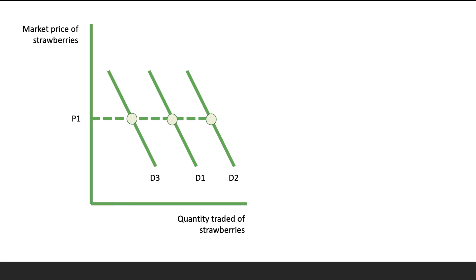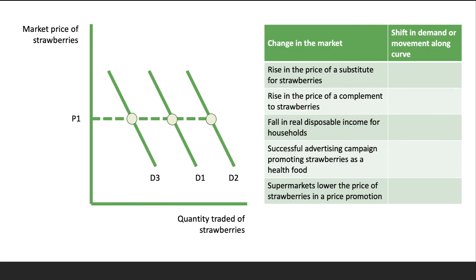Here are five factors - five changes in the market - and your task is to think about what's going to happen to the demand curve for strawberries. Are we going to go from D1 to D2, an outward shift, or from D1 to D3, an inward shift of demand? Press the pause button, have a go, work your way through the five examples and we'll go through them together when you're ready. The first one: a rise in the price of a substitute for strawberries - perhaps an increase in the price of raspberries, blueberries, cherries, or some other substitute.